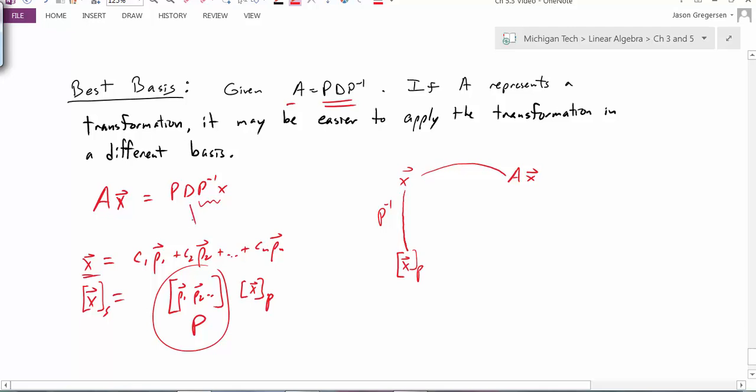Now, the next matrix I'm going to multiply is D. D essentially does the transformation that A did, but now it does it in a cleaner way. When I multiply by D, I'm just stretching along whatever the basis vectors are. I've done an easier transformation to get some result over here. D times the coordinates in terms of the P basis. And I take that result and I use P, the matrix P, to change my basis back. And I'm left in that same position, AX.